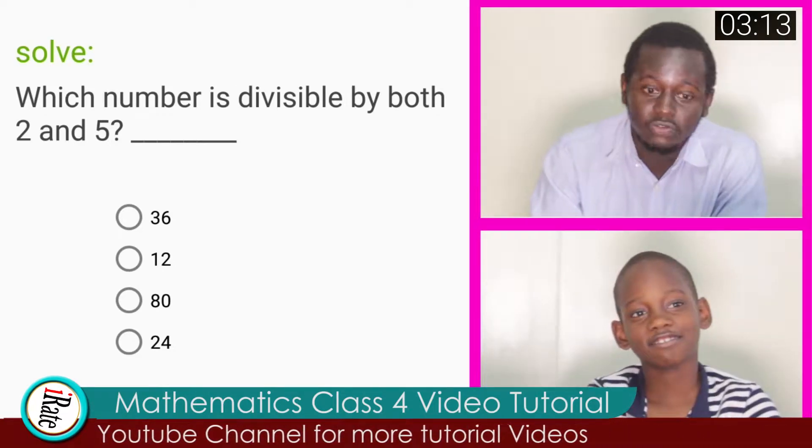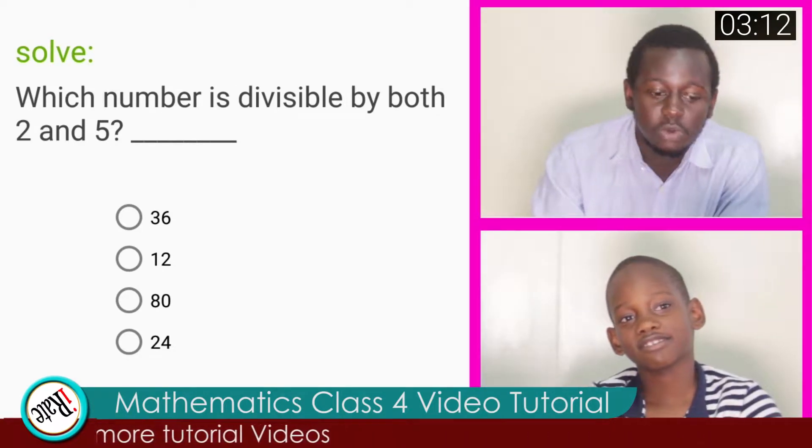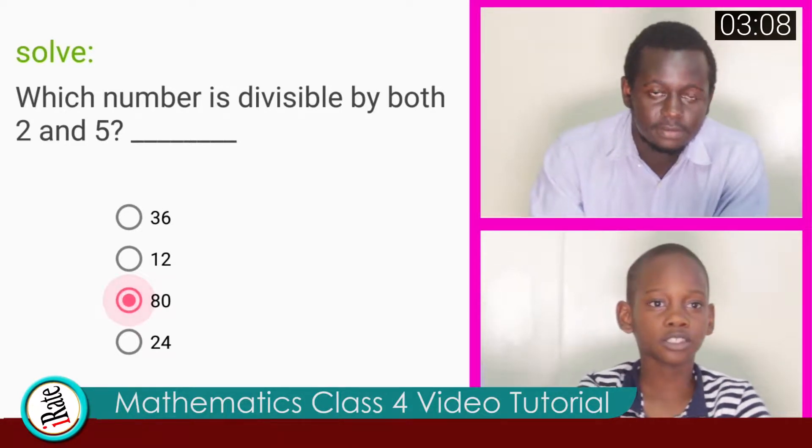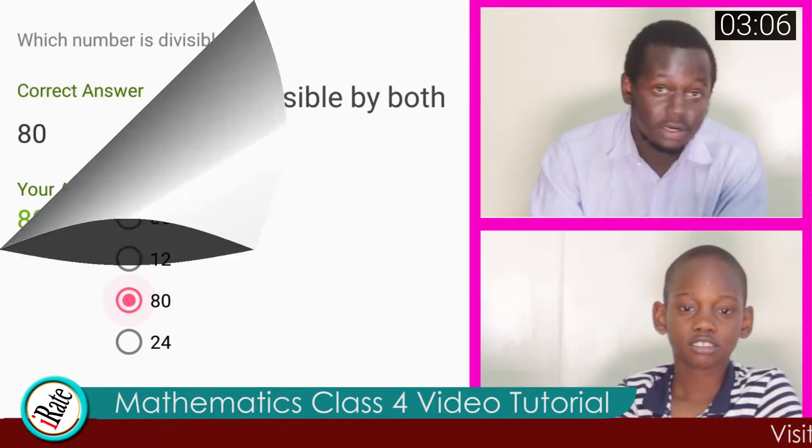Question number two. Solve. Which number is divisible by both two and five? The answer to question number two is eighty. You are correct.